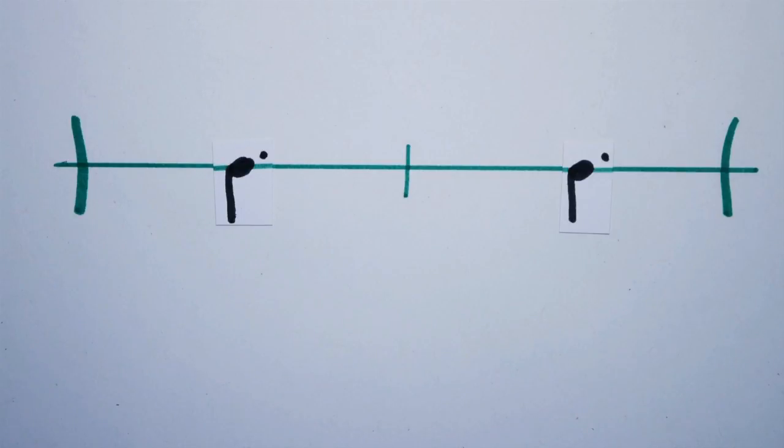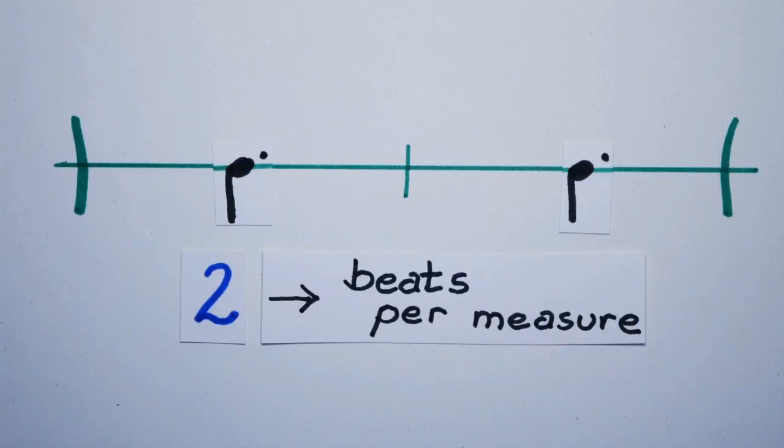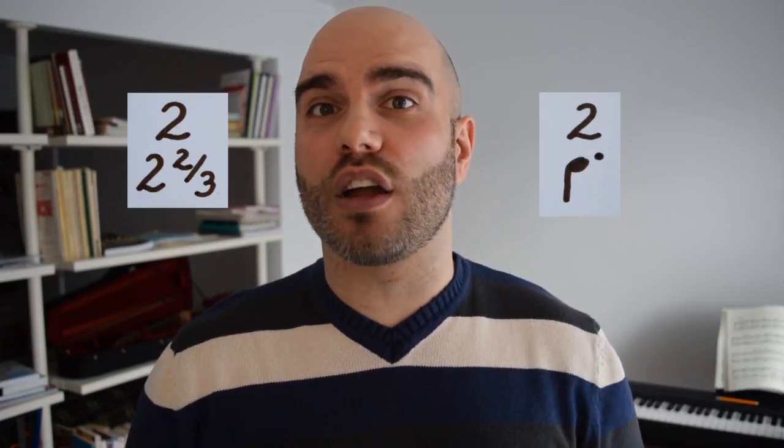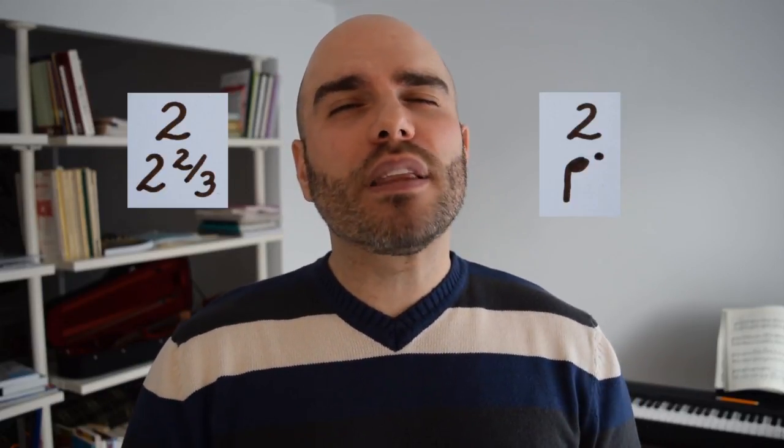The top figure of the time signature should be the number two, but there's a little problem. There simply is no whole number we could use to represent a dotted quarter note in the bottom figure of the time signature. Sure, we could get creative and write two and two thirds to symbolize the dotted quarter note, or we could flat out just draw a dotted quarter note instead of putting a number. But there's a more concise alternative to all this.